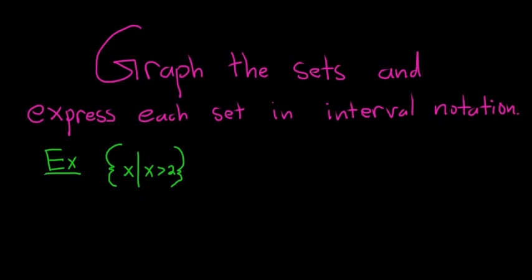First, let's graph it. To do that, you draw a number line — a horizontal line like this. Then you plot the number of interest. In this case, 2 is the number we care about. And it's all the numbers bigger than 2, so all the numbers over here on the right.